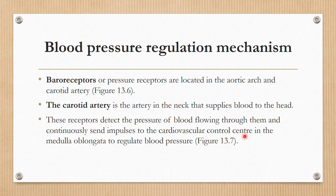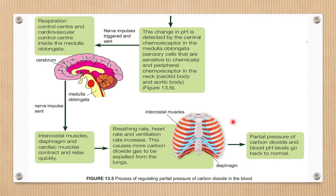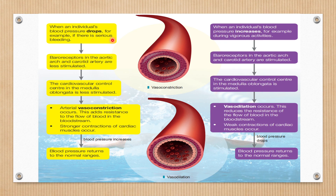Impulses are sent to the cardiovascular control center in the medulla oblongata to regulate blood pressure. The medulla oblongata is a very important part of the brain — it contains both the cardiovascular control center and the respiration control center.